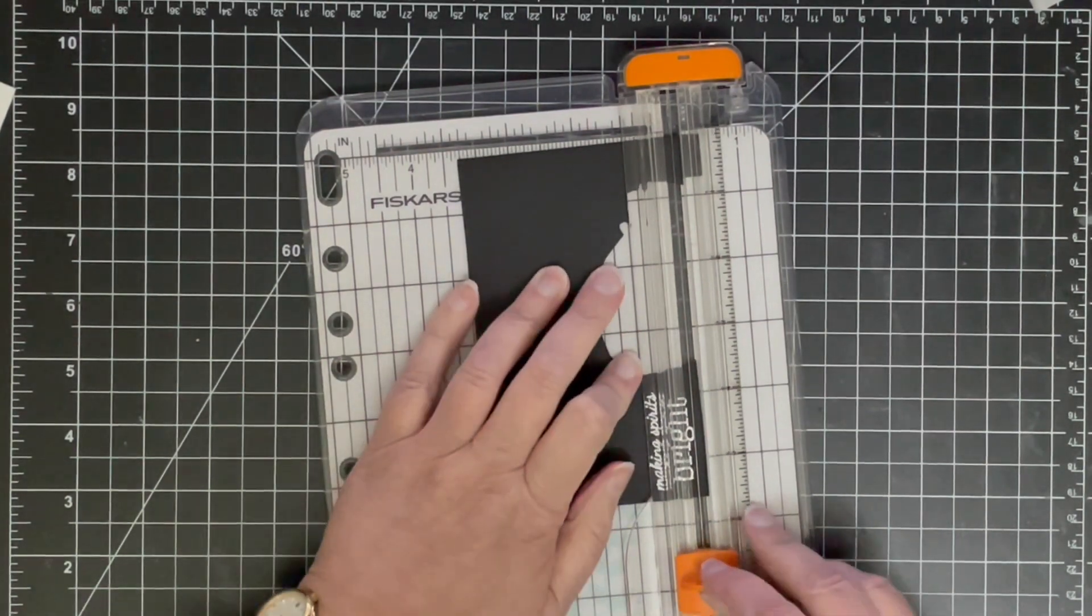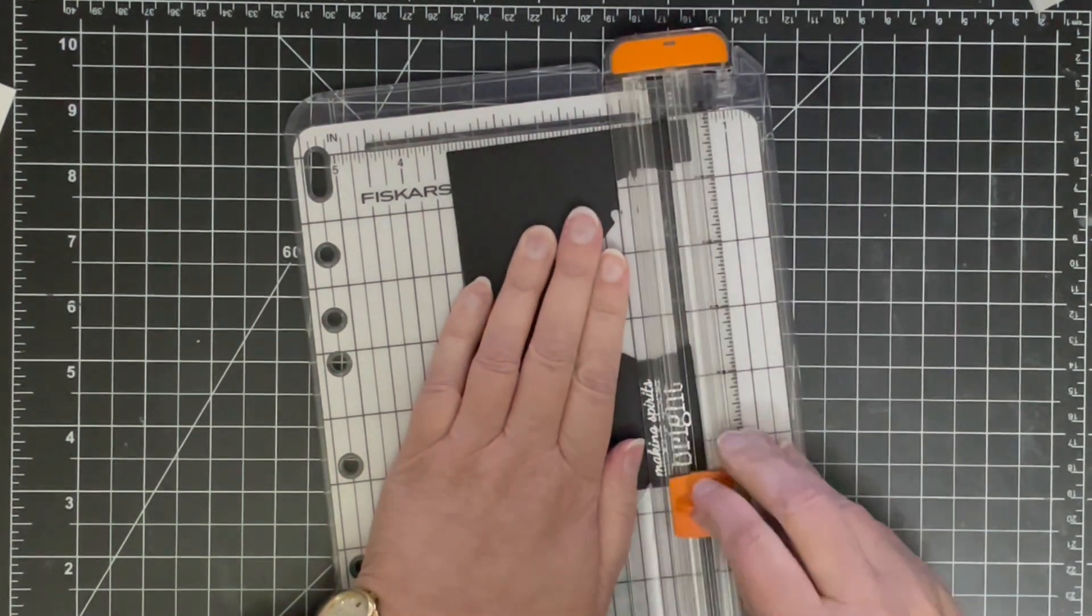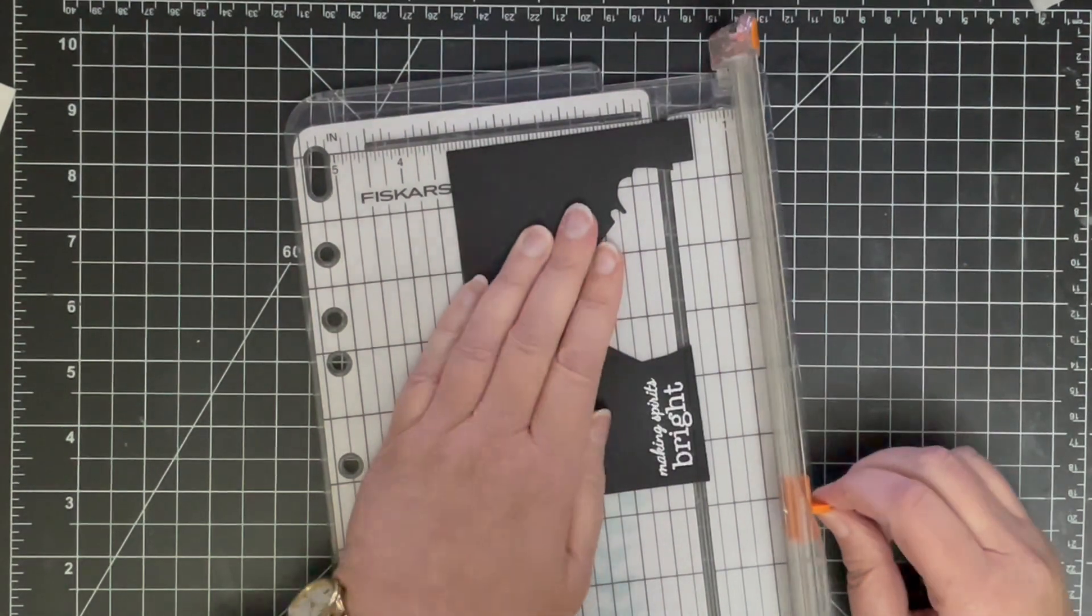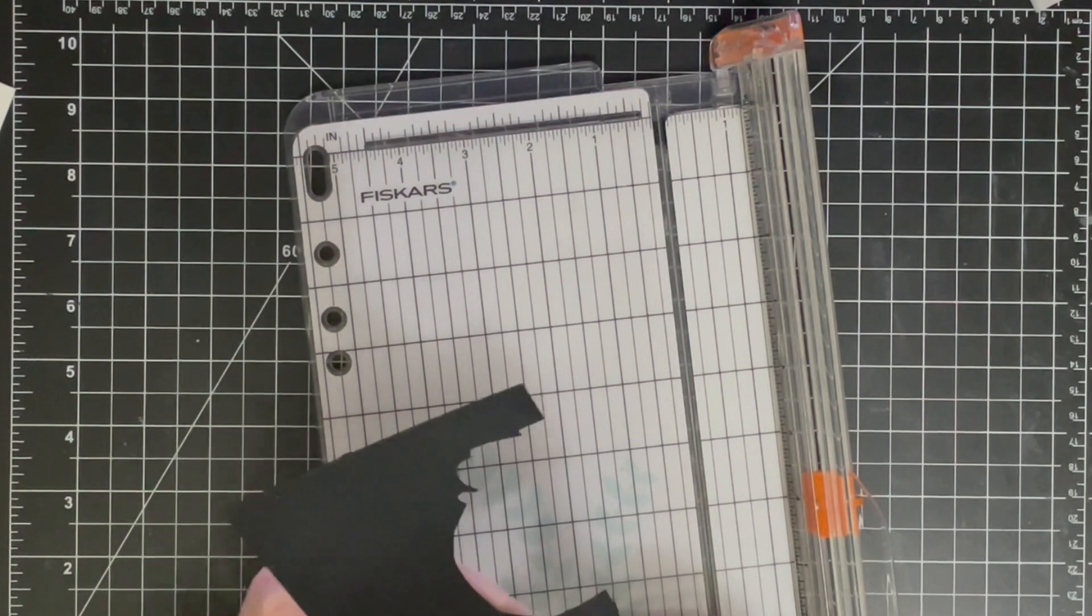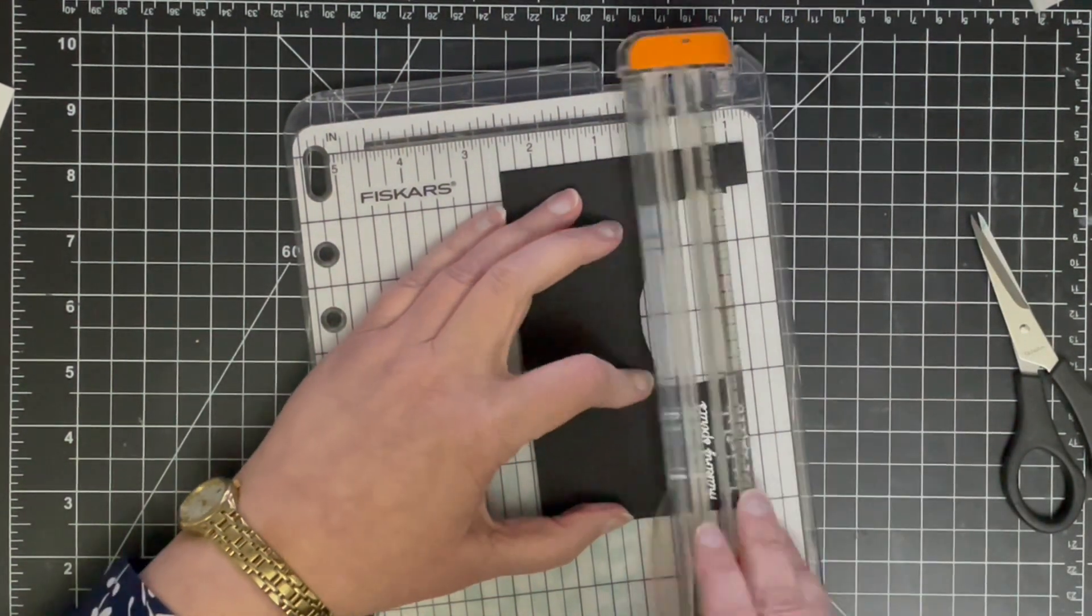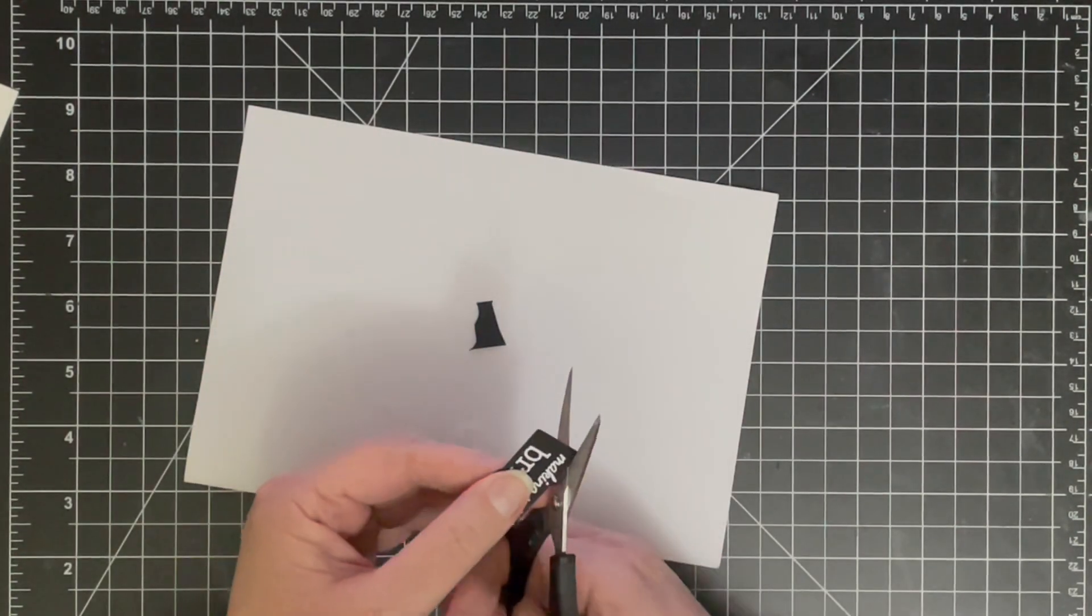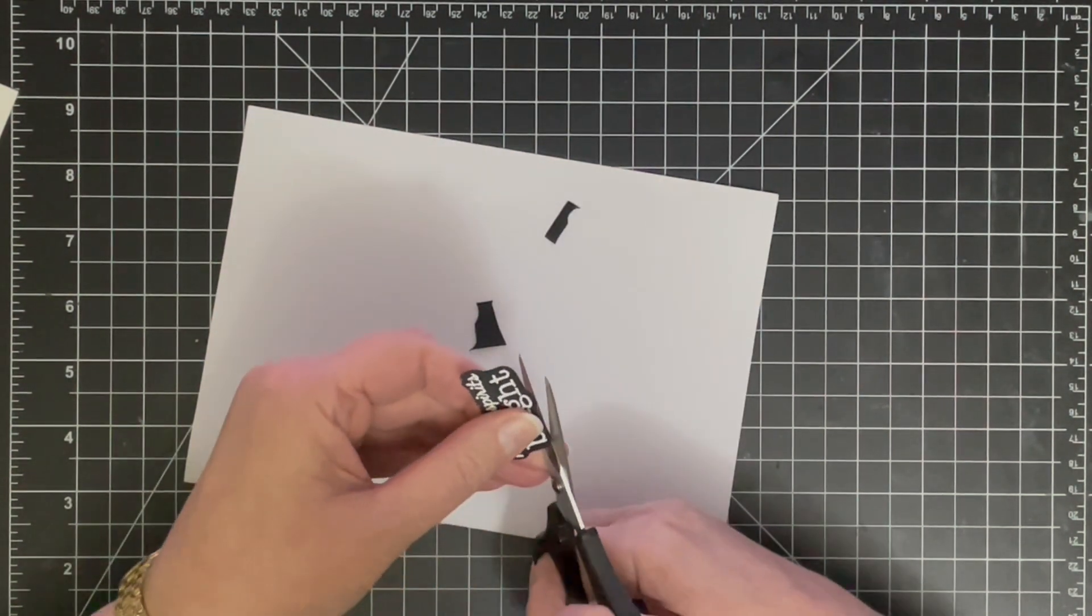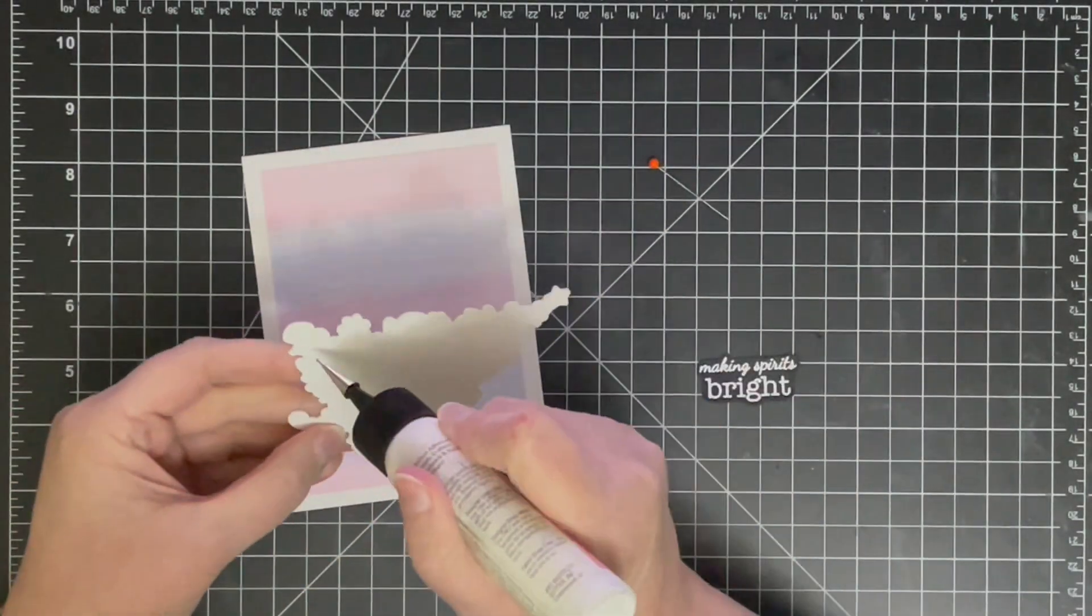Yeah, Making Spirits Bright I thought fit that lovely tree really well. Now I'm doing my little trick here of cutting around parts of the sentiment with my paper trimmer to get straight edges but then I'm going to be fussy cutting around some of the letters that go below the lines and letters that go above the line. Because I don't want to waste too much of my card design covered up by a black panel, I'm trying to get the edge of that piece as close to the letters as I possibly can so it doesn't take up too much real estate on my card.